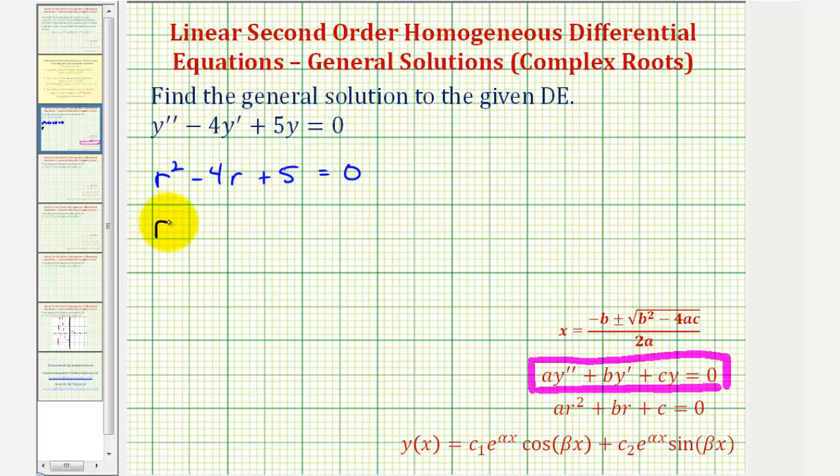So we'll have r equals negative b, which would be negative negative 4, plus or minus the square root of b squared, which is negative 4, minus 4 times a, which is 1, times c, which is 5. And all this is divided by 2 times a, or 2 times 1.